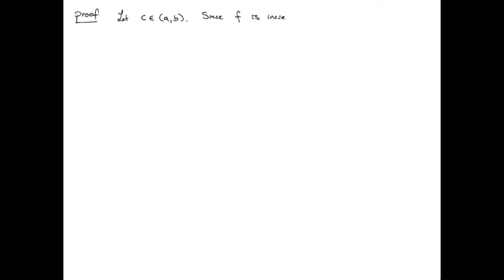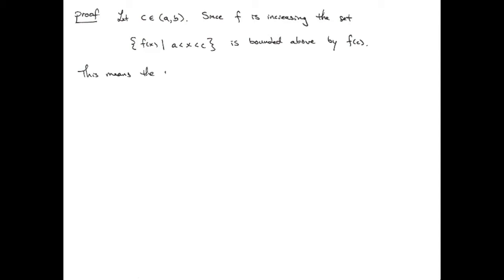For the proof, let's assume C is in the interior of the interval. Since the function is increasing, we isolate the range values for everything to the left of C — the image of the interval from A to C under F. That's bounded above by F of C since F is increasing. So by completeness of the real numbers, the supremum exists.